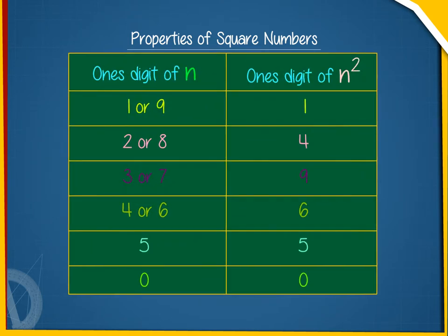Property 3: Given the ones digit of a number n, we can easily determine the ones digit of its square, n².